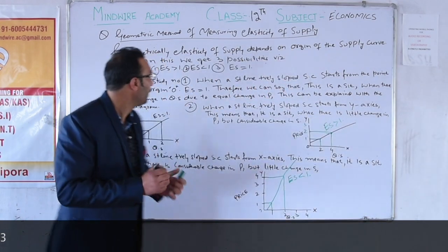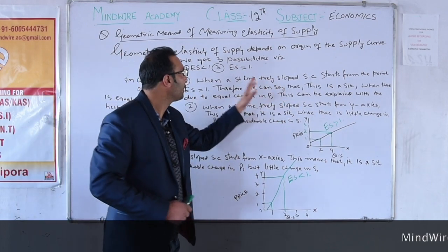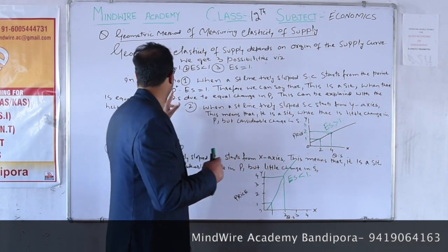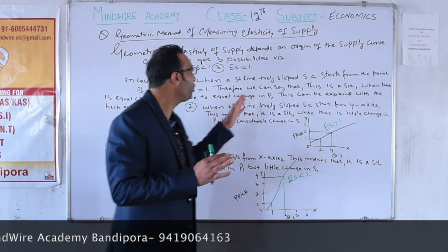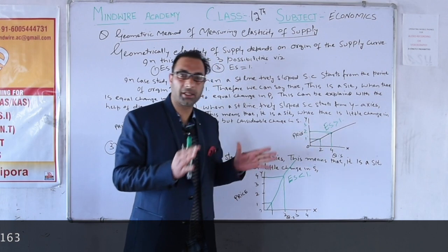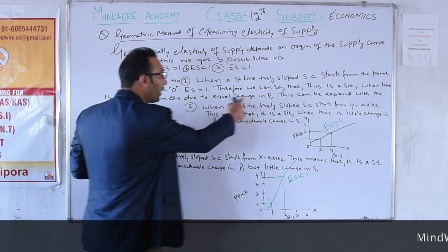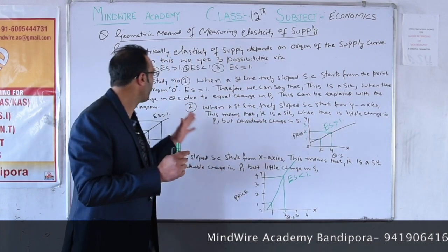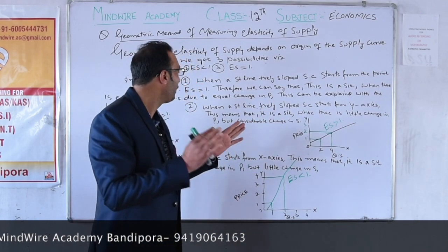In case number one, when a straight line positively sloped supply curve starts from the point of origin, at that time the elasticity of supply is equal to 1. This is the market situation where there is equal change in quantity supplied due to equal change in price. Whatever the price changes, the supply will also change by the same proportion.